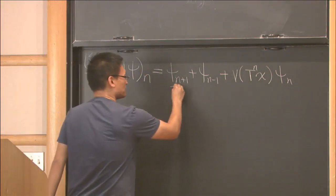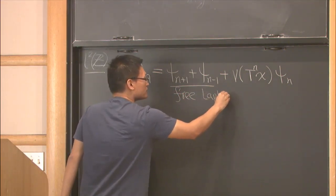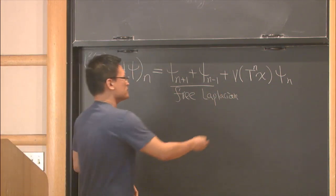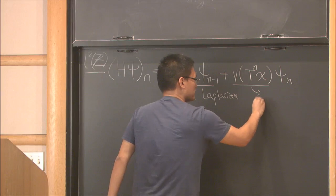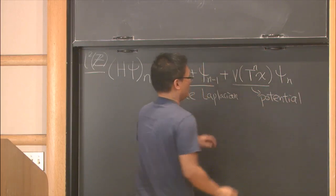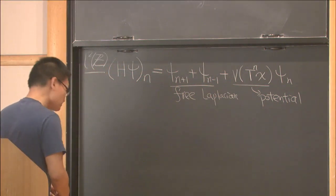So this part can be viewed as a discrete version of a free Laplacian. And this v, we usually call it the potential. This function v we call the potential function.